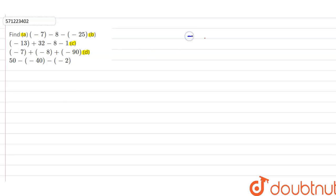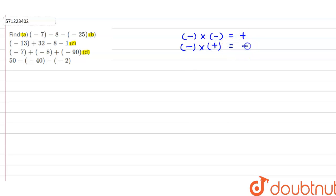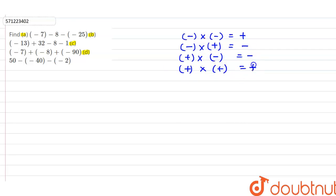The concept is: if we multiply minus with minus, then it will be positive. The second concept is: if we multiply minus with plus, it will be negative. If we multiply plus with minus, it will also be negative, and if we multiply plus with plus, then it will be positive. Using these concepts, we will solve all four parts.